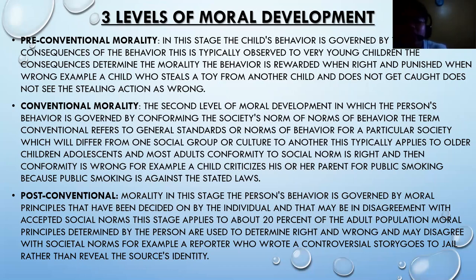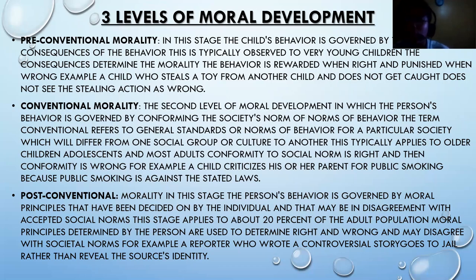The last level is post-conventional morality, where a person's behavior is guided by moral principles decided upon by the individual, which may be in disagreement with accepted social norms. This stage applies to about 20% of the adult population. Moral principles are determined by the person and may disagree with societal norms. For example, a reporter who wrote a controversial story goes to jail rather than reveal the source's identity — this person stands on his or her own moral principles.